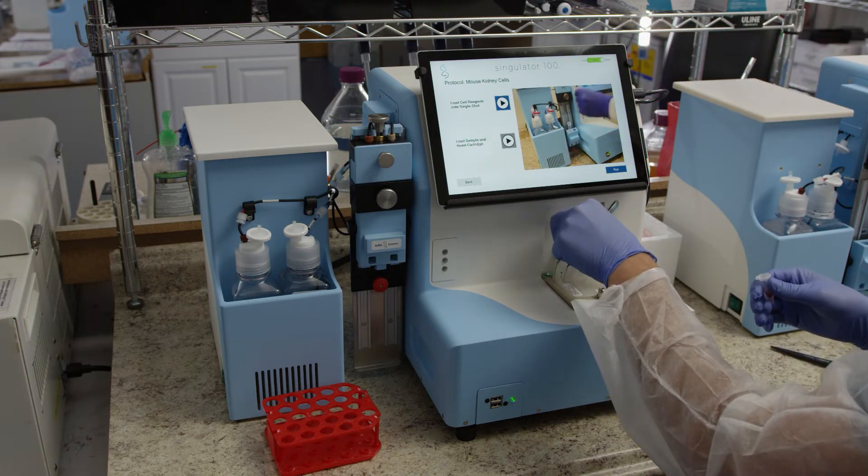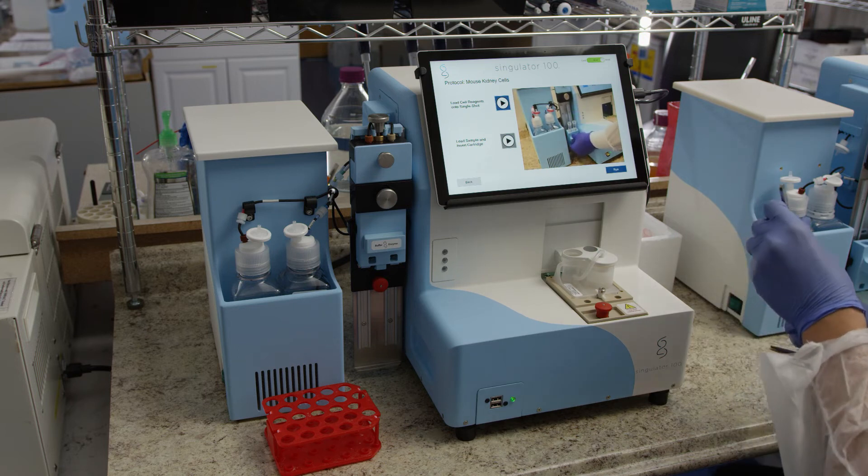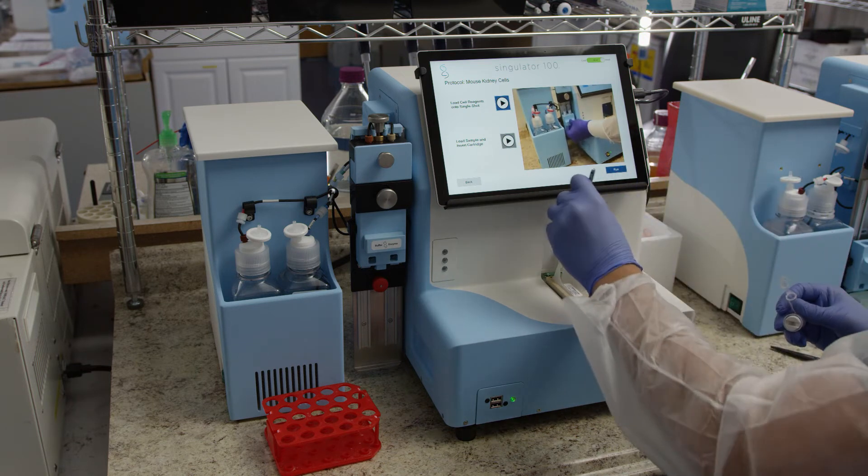Remove the sample disruption cap from the cartridge. Place the sample at the bottom of the disruption chamber and replace the disruption cap.